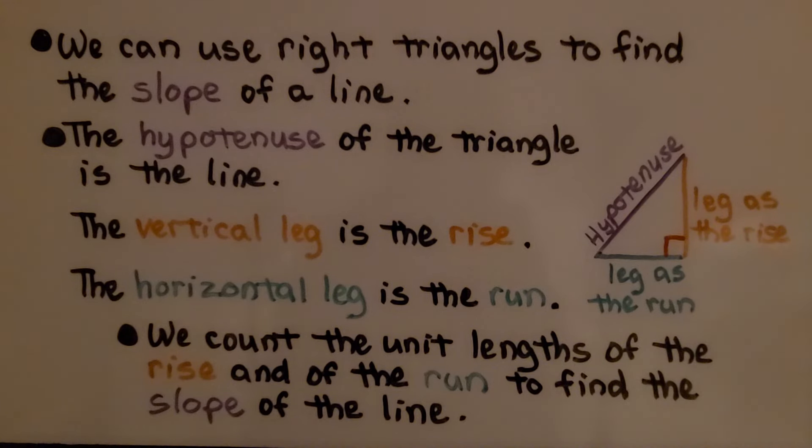The hypotenuse of the triangle is the line. Remember, the hypotenuse of a right triangle is the longest side. The vertical leg is the rise. The horizontal leg is the run. We count the unit lengths of the rise and the run to find the slope of the line.